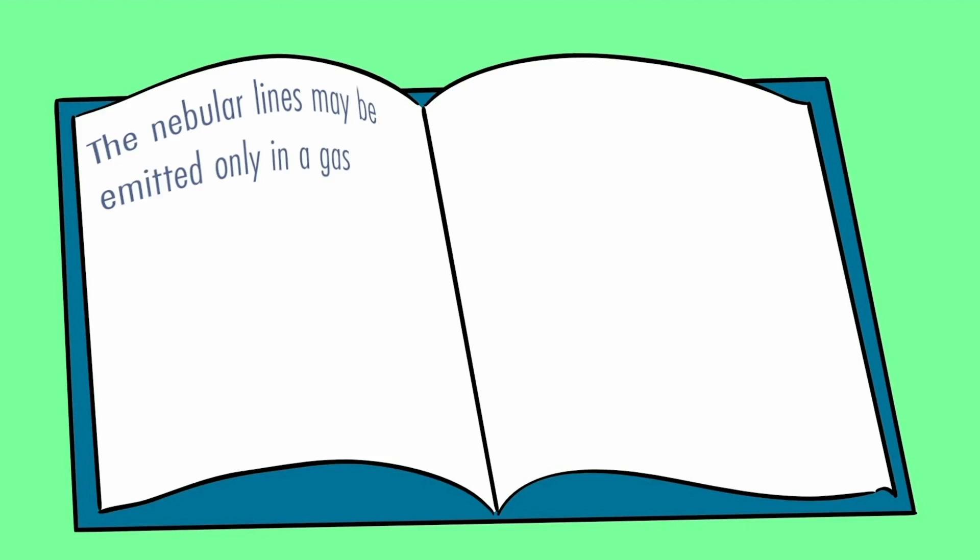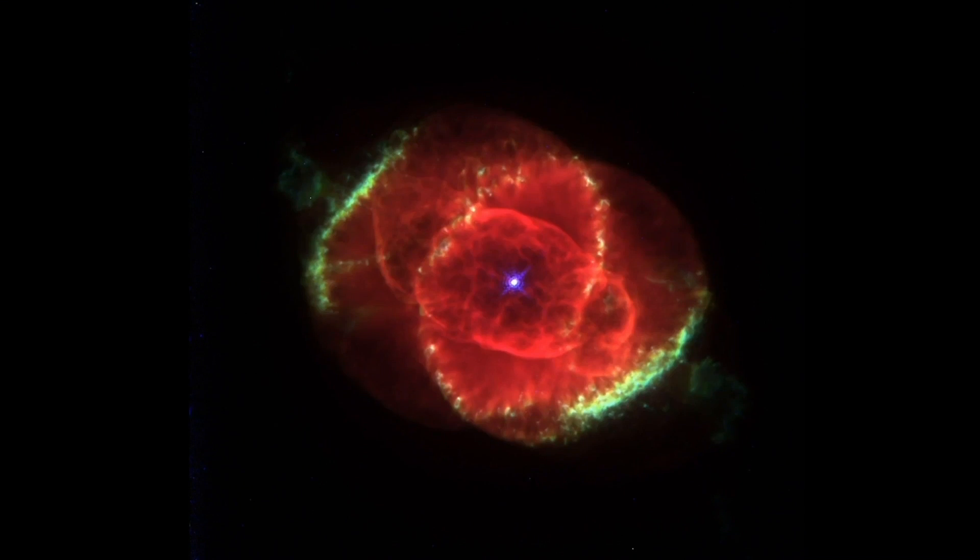So how did you go? Let's see Bowen's solution to see how yours compares. Bowen came to the conclusion that the unknown lines were in fact caused by a known element just in a different atmosphere. As Dugan said, in a gas of very low density, like a nebula.